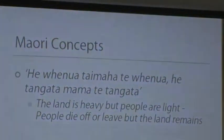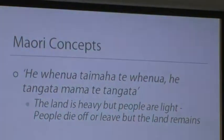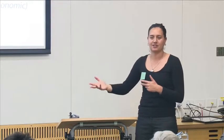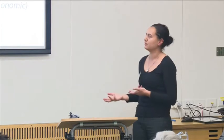Just some key Māori concepts that I thought would be quite good to start off. The first is a whakatauke: He whenua tai maha te whenua, he tangata mama te tangata. What this talks about is that people will die and pass on, but the land will stay for generations. When we think about Māori and environmental aspirations, it's for perpetuity. It's not a short-term view, it's a long-term view.